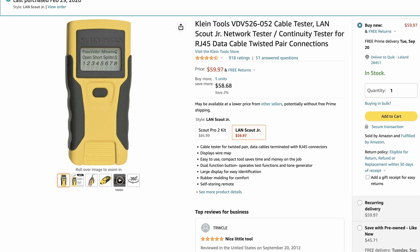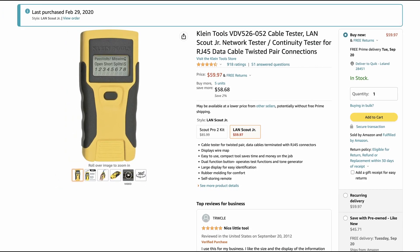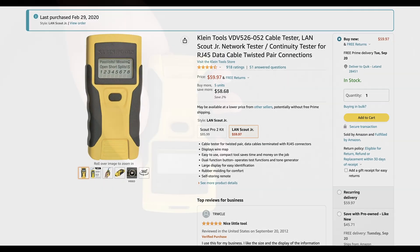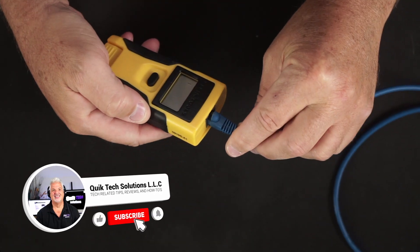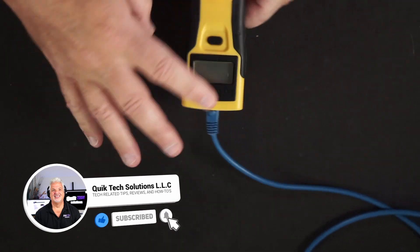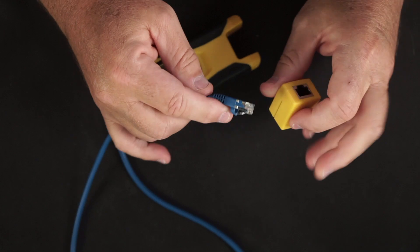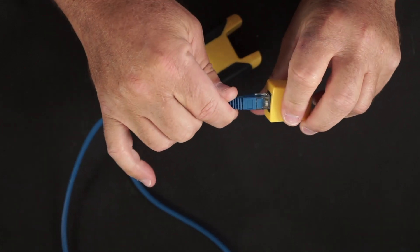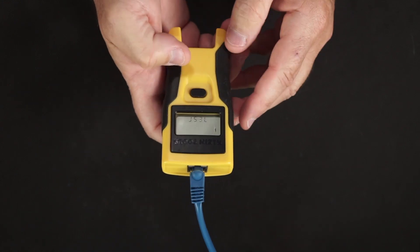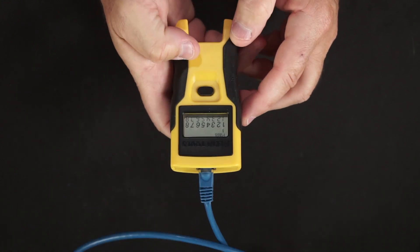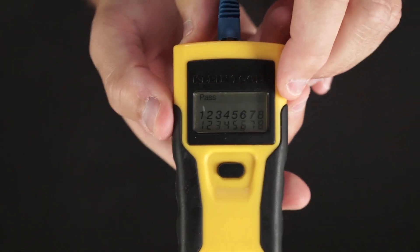Coming in at number three, the Klein Tools VDV 526-052, better known as the Klein Scout Jr. Network Tester at $59.97. This tool is awesome for doing a quick test after terminating cables. It'll tell you pass, open, shorts, miswire, etc. It's really super simple and easy to use. This device tells you right on the main unit whether you've passed or have an issue.